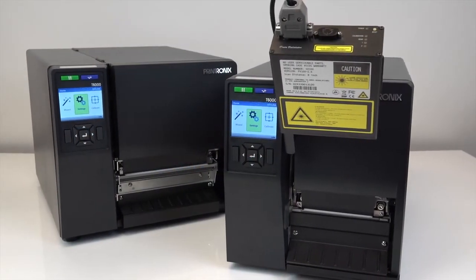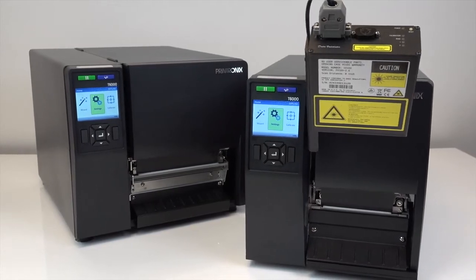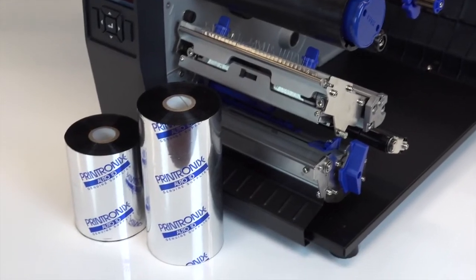The following video will demonstrate the proper procedure for loading ribbon and media to any 4 or 6 inch T6000 thermal printer.